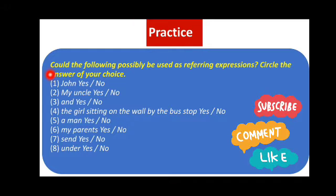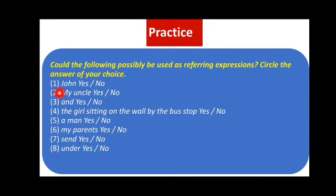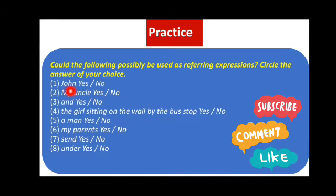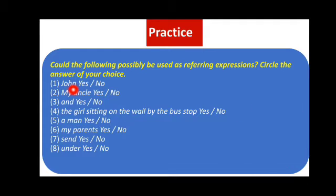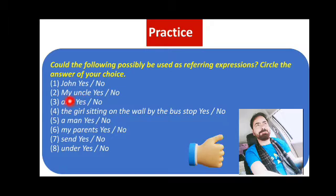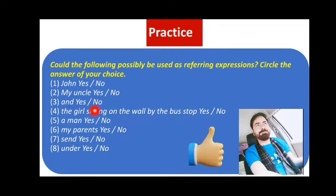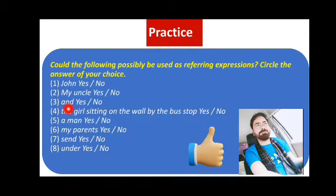Practice in referring expression: Could the following possibly be used as a referring expression? First, John — yes, because when we say John, we have a particular person in our mind with a particular referent. Second, my uncle — yes, because my uncle also has a referent when somebody utters it. Third, and — which is a conjunction — cannot be used as a referring expression because we don't have a particular referent in mind. The girl sitting on the wall by the bus stop — yes, because I have a particular girl in mind. A man — yes, the answer is yes. My parents — yes, it can be used as a referring expression because it has a referent in mind, referring to a pair of people.